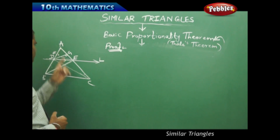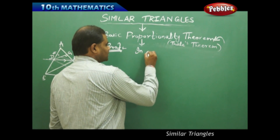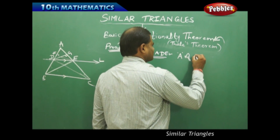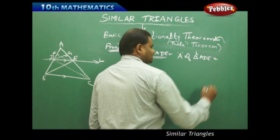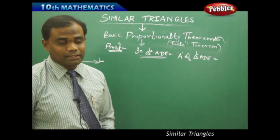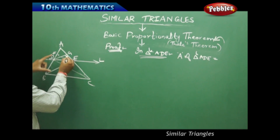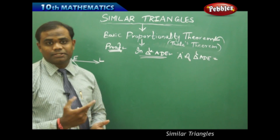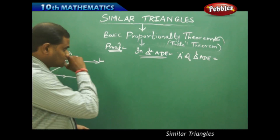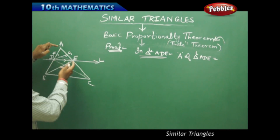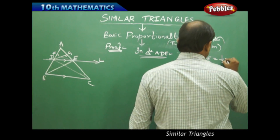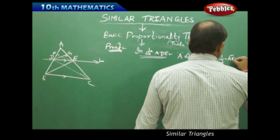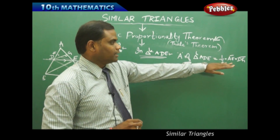I reconsider triangle ADE, but this time I take the base as AE and the height as DG. The height changes according to the base of the triangle. So area of triangle ADE in this case is half times AE times DG.